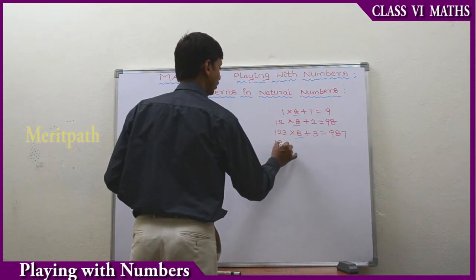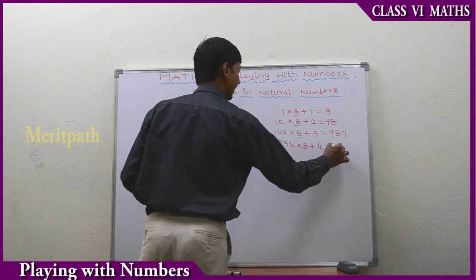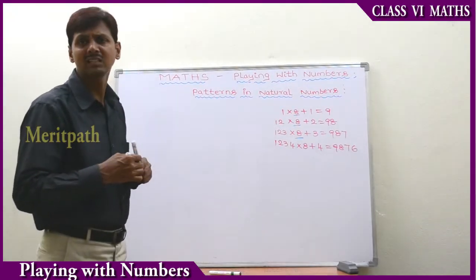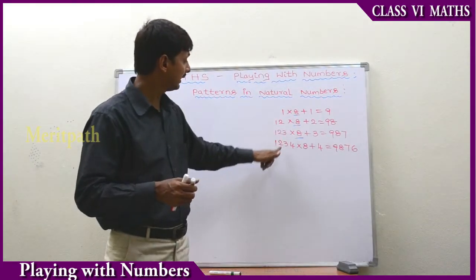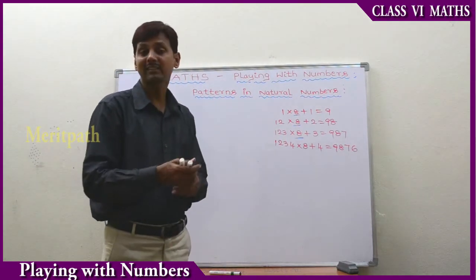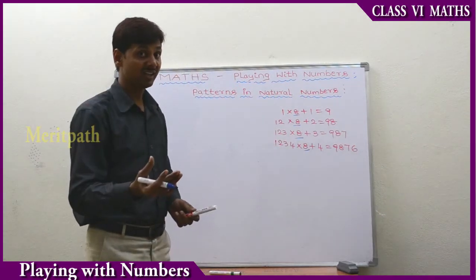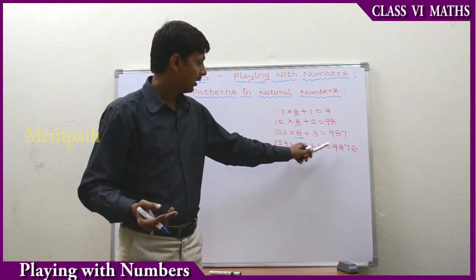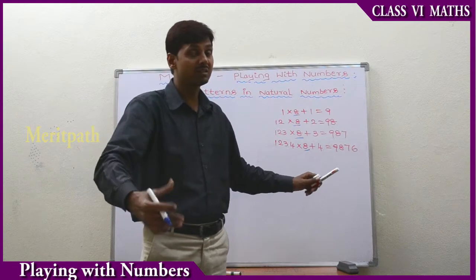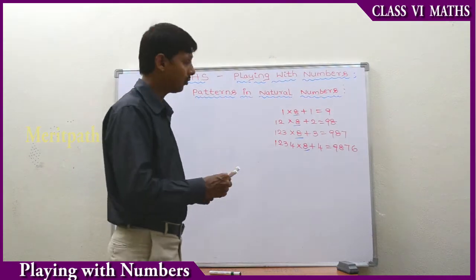The sequence is 1, 2, 3, 4 into 8 plus 4 is equal to 9, 8, 7, 6. Did you observe that we have written the next number like 1, 2, 3, then after that 1, 2, 3, 4? We multiply by 8, which is a constant number. So 3's next natural number is 4, and the result equals 9, 8, 7, 6.